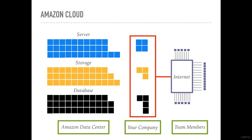Looking at this graphic, I've listed out the three major products offered by Amazon: the server, the storage, and the database. Once we combine the right quantity of these products, we can package them under our company name and use the internet to provide remote access to team members who may be located thousands of miles away from the Amazon data center.